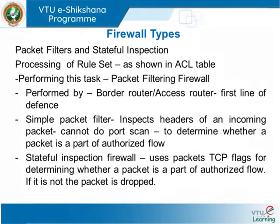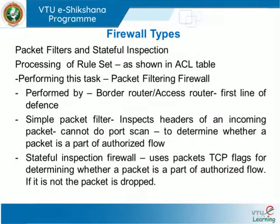Next, we will see the different types of firewalls. Firewall types can be categorized into packet filters and stateful inspection firewalls. The rule set we saw in the ACL involves matching IP, TCP, and UDP headers. Sometimes it is necessary to check whether a packet carries a specific source or destination IP address or port number. Any firewall designed to do this kind of checking is called a packet filtering firewall, and it generally resides in the border router or access router — the first line of defense.